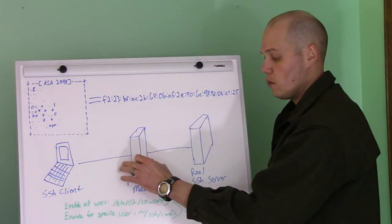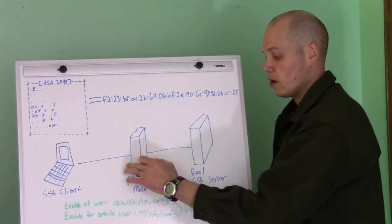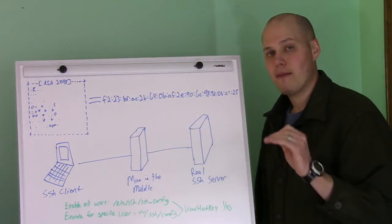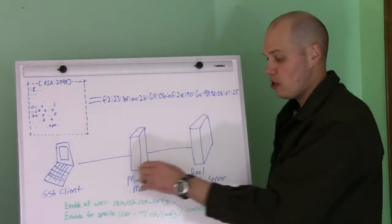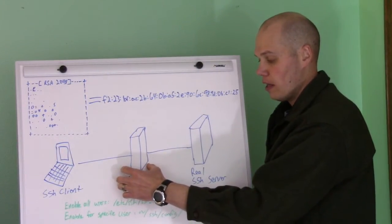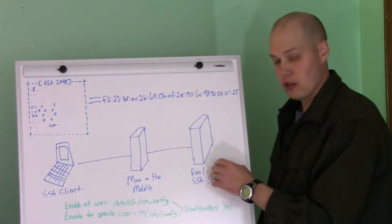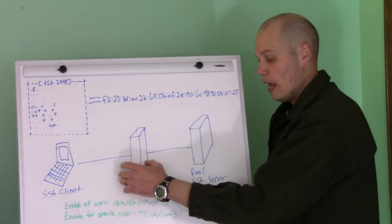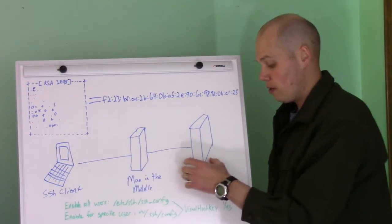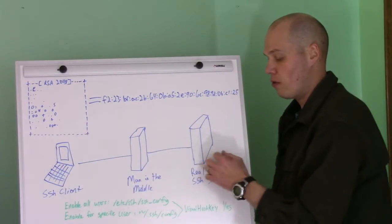they can do what's called a man-in-the-middle attack. What they do is this server here is in between the client and the server you're trying to get to, and it pretends to be this server, and it basically passes everything through.